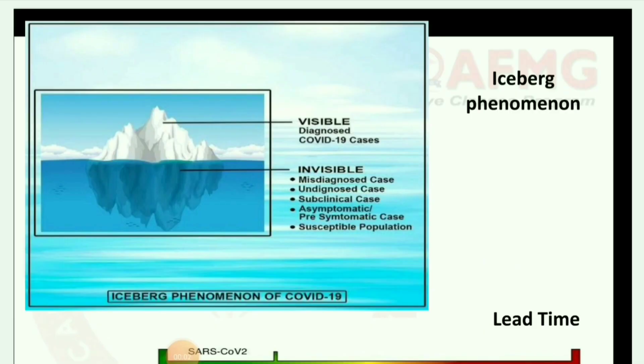Next image is the iceberg phenomenon. You can see the visible and invisible parts. Visible: diagnosed COVID-19 cases. Invisible: misdiagnosed cases, undiagnosed cases, subclinical, asymptomatic, pre-symptomatic cases, and susceptible population — iceberg phenomenon for COVID-19.